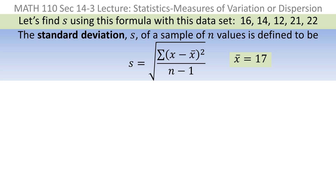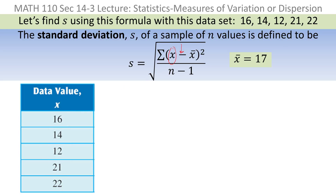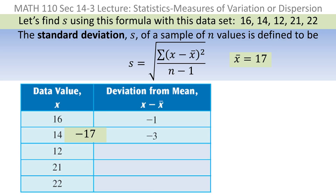Now I'm ready to build my table. I make a column for the data: 16, 14, 12, 21, and 22. Then, looking at the formula, each data point has the mean subtracted from it — the deviation from the mean. With x-bar equal to 17: 16 minus 17 is negative 1, 14 minus 17 is negative 3, 12 minus 17 is negative 5, 21 minus 17 is 4, and 22 minus 17 is 5. Those are the deviations from the mean.